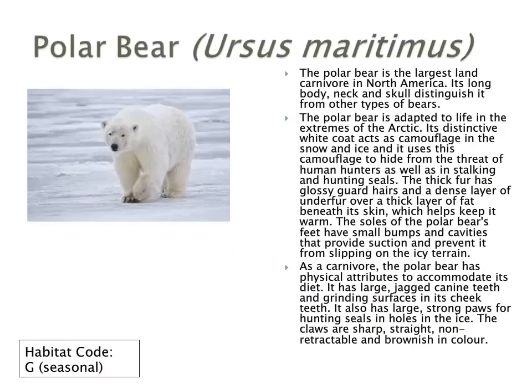The polar bear is white given its environment and polar settings. Its body is also designed to be a swimmer for hunting prey like seals. It is the largest land carnivore in North America, very different in both anatomy and structure from the black bear. It has large strong paws for hunting seals through holes in the ice, with claws that are sharp, straight, non-retractable, and brown in color.